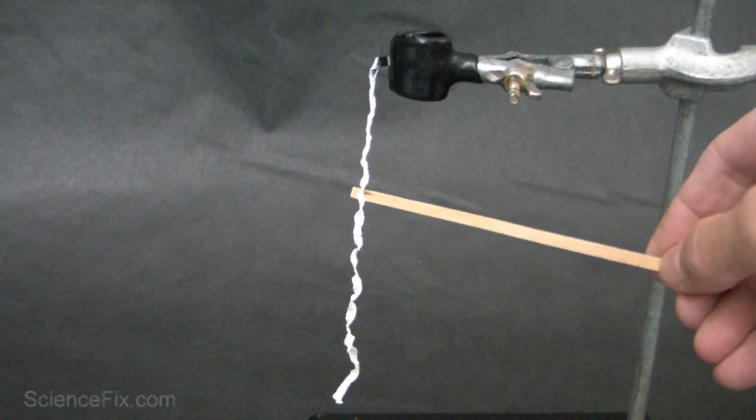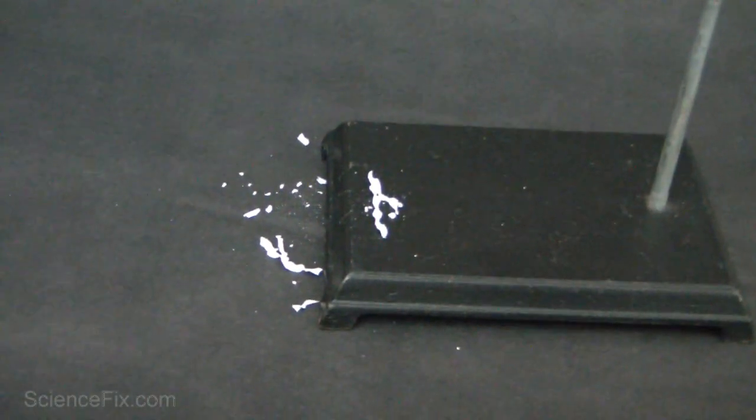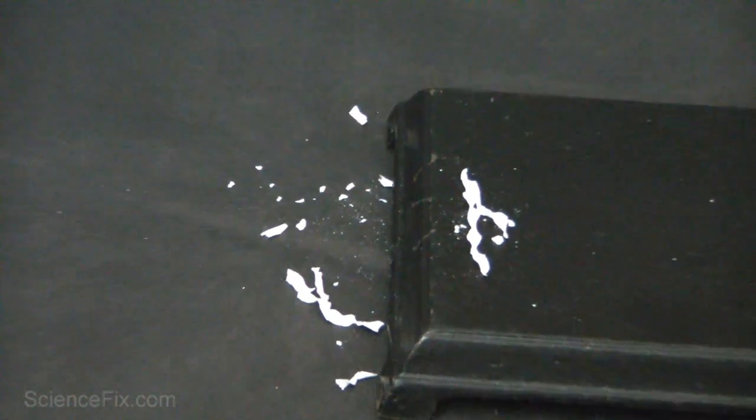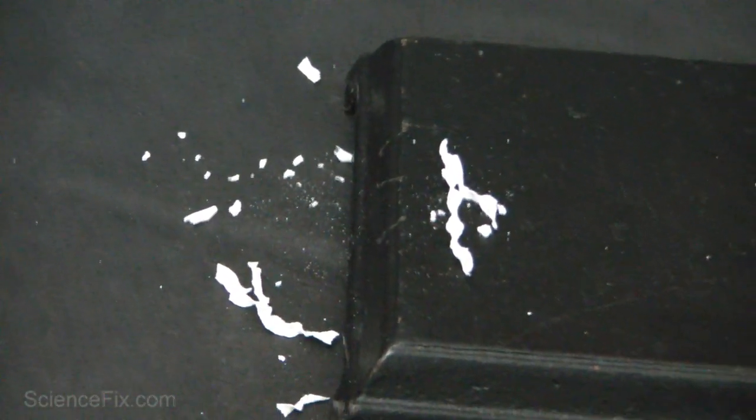Now we have an up-close look at the magnesium oxide. You can see it has a white color. That's one of the properties. And you can see it's very brittle. Basically, it's going to turn into a powder if you touch it.